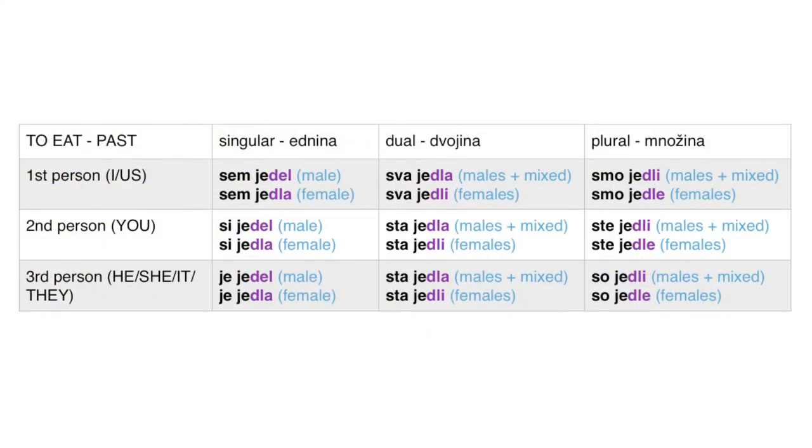Moving on to the verb 'to eat' in past tense, we also have a formula. The first word is the conjugated verb 'to be' in present tense, and the second word consists of 'je' plus an appropriate add-on. The add-on doesn't change by person, but it does change with singular, dual, and plural — and there's a difference between male and female. Let's look at the table. First person singular is 'sem jedel' for male and 'sem jedla' for female. Second person singular is 'si jedel' for male and 'si jedla' for female. Third person singular is 'je jedel' for male and 'je jedla' for female.